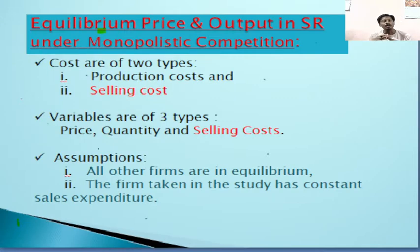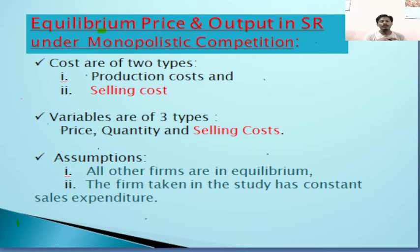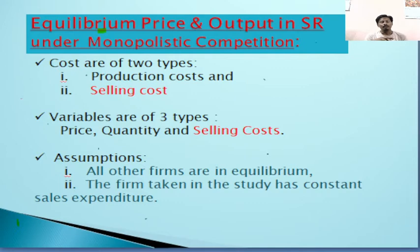Such expenditure incurred by the firm to increase sales volume is called selling cost or advertisement cost. Due to this, the analysis of the monopolistic competition market becomes more complex compared to monopoly and perfect competition, because the market model now has two types of cost: production cost and selling cost.